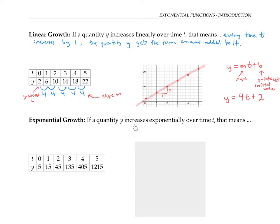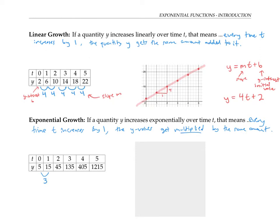If instead a quantity y increases exponentially with time t, that means that every time t increases by one, the y values get multiplied by the same amount. So in this example, as t goes from zero to one, y goes from five to 15 — that's multiplying by three. As t goes from one to two, y goes from 15 to 45 — that's a multiple of three. All of these ratios of successive numbers are ratios of three. You can see that the y values increase much more dramatically when we multiply y by the same number each time, compared to when we add the same number to y each time.